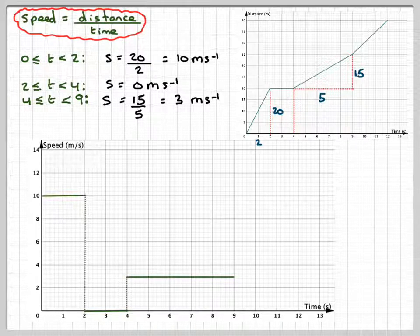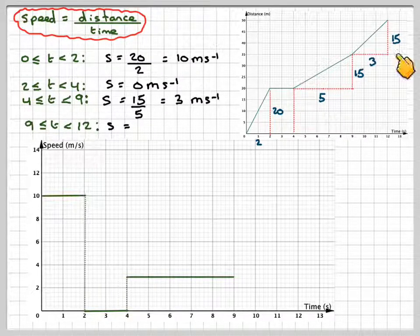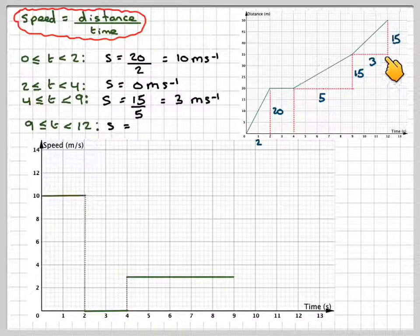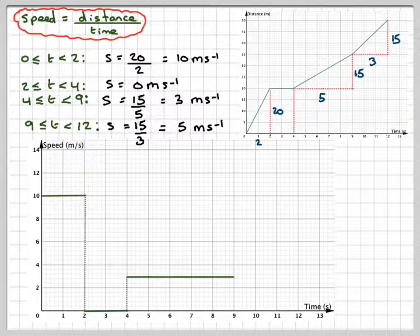For the final part of the journey, the final 3 seconds, this scale here is 15 and this is 3, so the speed will be 15 divided by 3, which is 5 meters per second.